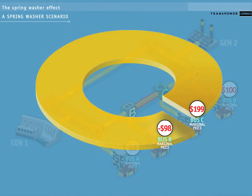Now we can see the spring washer effect. Bus C has to pay a large amount, while bus B has to pay a negative amount.